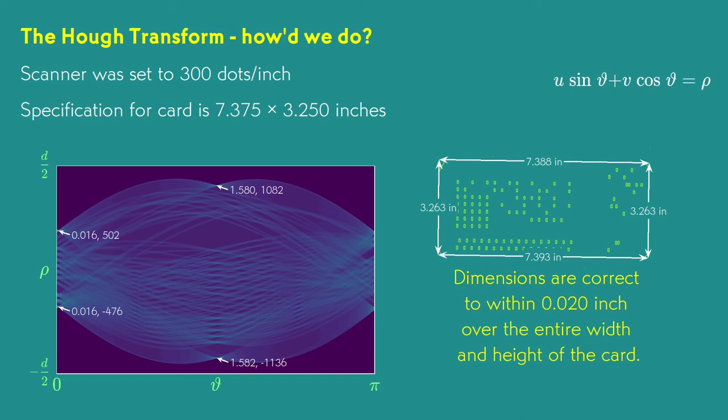Of course, the proof of digitization is in the digits. Let's use this alignment to pull the bits off the card.